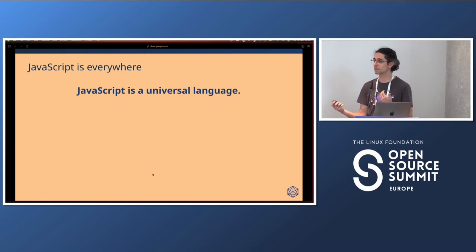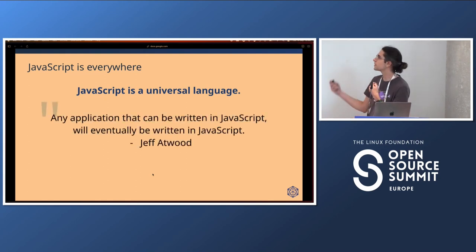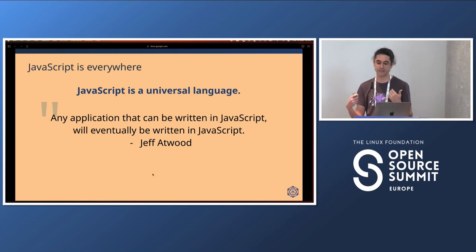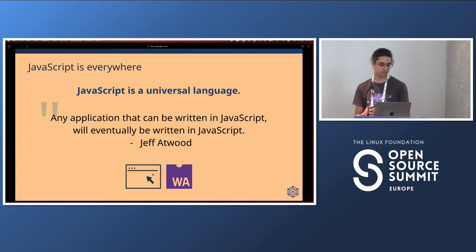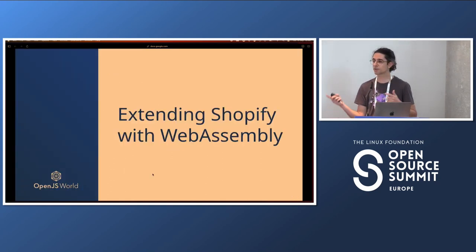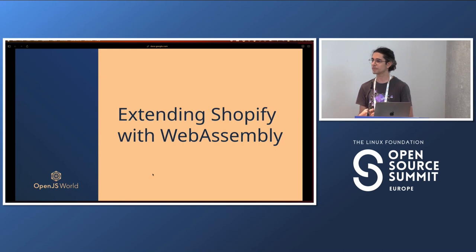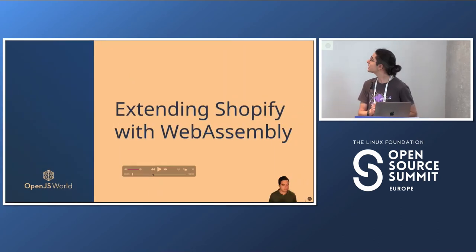We can consider JavaScript a universal language. There's a famous quote from Jeff Atwood: any application that can run in JavaScript will eventually be written in JavaScript. We have browser use cases where WebAssembly started, but it opens a new set of possibilities for writing JavaScript in many other environments where before it wasn't supposed to run. And here is where we'll talk specifically about Shopify's use case — why they use WebAssembly and JavaScript to extend their platform. Now it's Saul's turn.